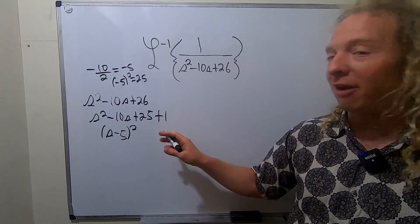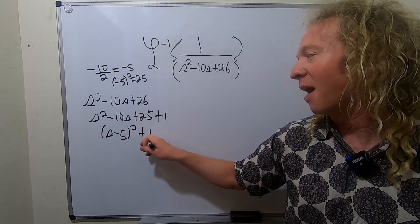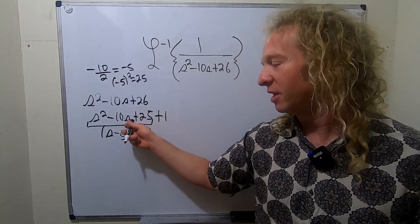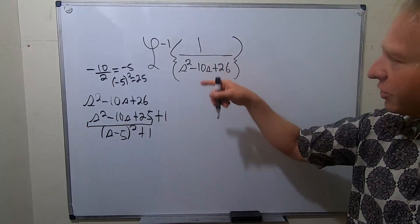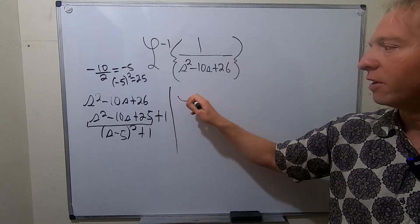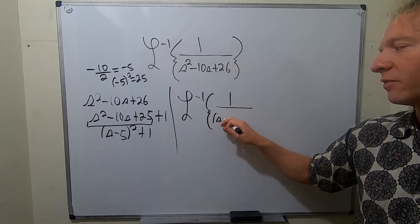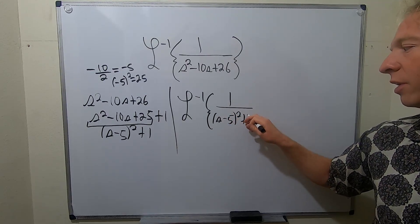And then this is, oh, I almost messed up. Plus 1. I was going to put 26. That's super bad, right? Because this whole thing here is this. All right. So good stuff. So let's go ahead and rewrite what we have. So inverse Laplace of 1 over, and then we have s minus 5 squared plus 1.